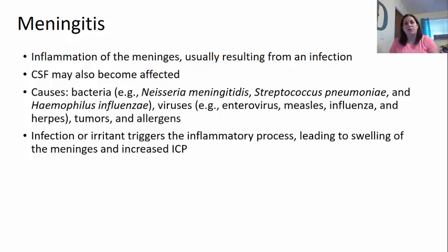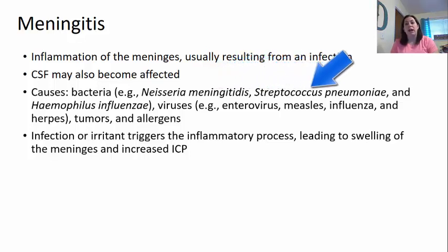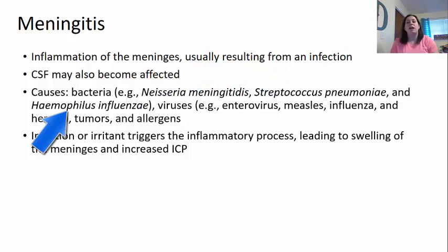There are several causes for meningitis. It could be bacterial meningitis, with a couple of different culprits. The first one has 'meninges' in the name, so this is one that's going to affect the meninges for the most part. The next one is Streptococcus pneumoniae — normally associated with pneumonia but it could affect your meninges. And then there's another bacteria that mimics the flu, an influenza-type bacteria.